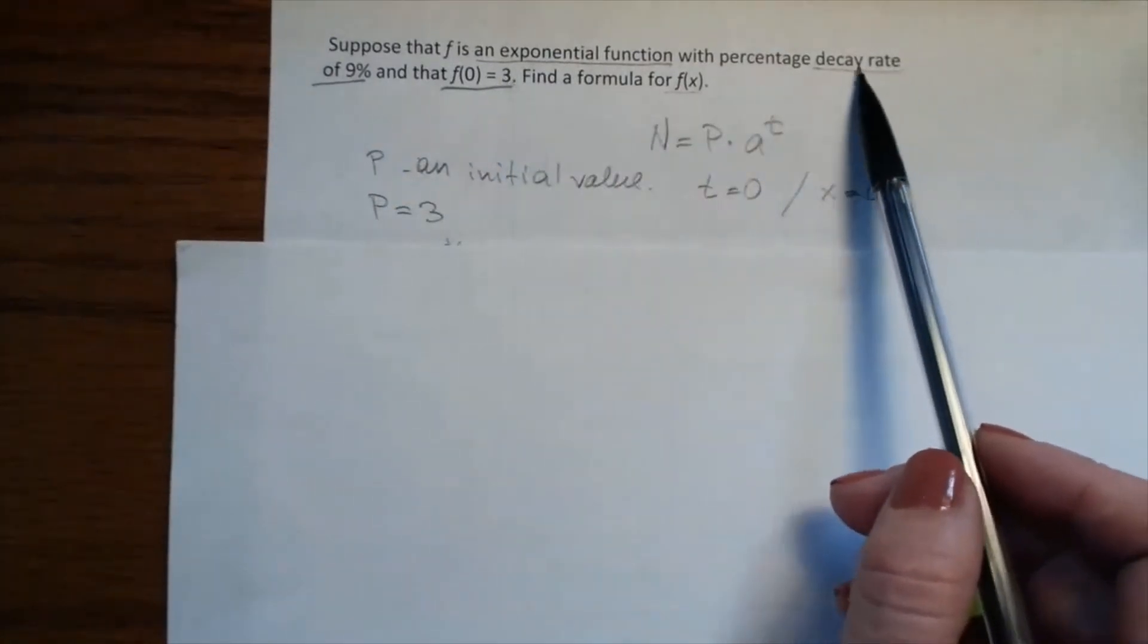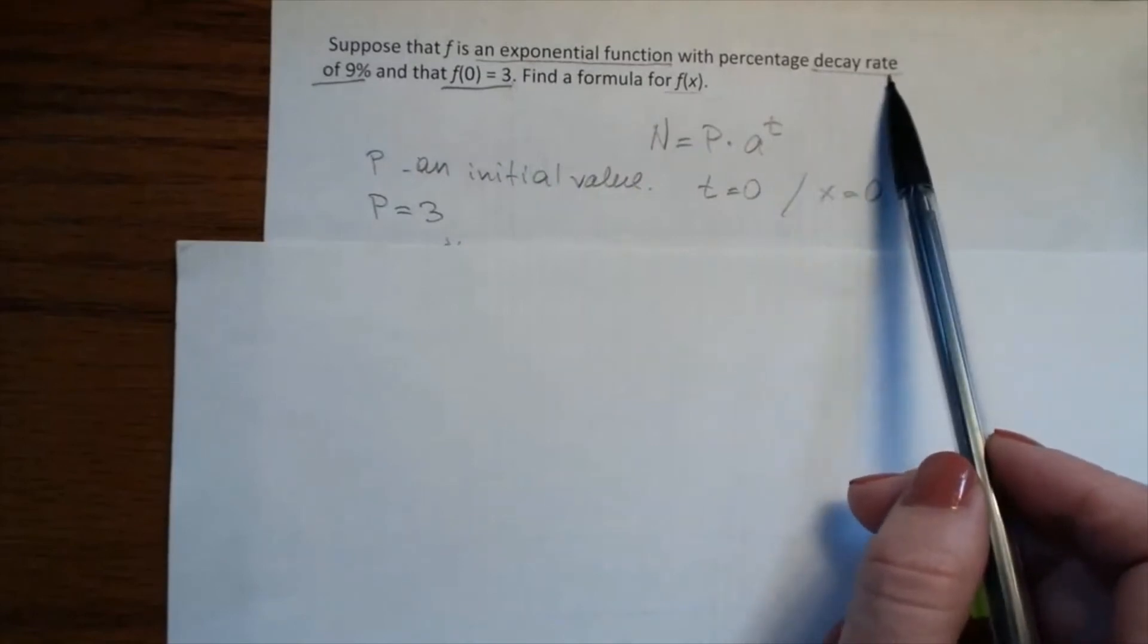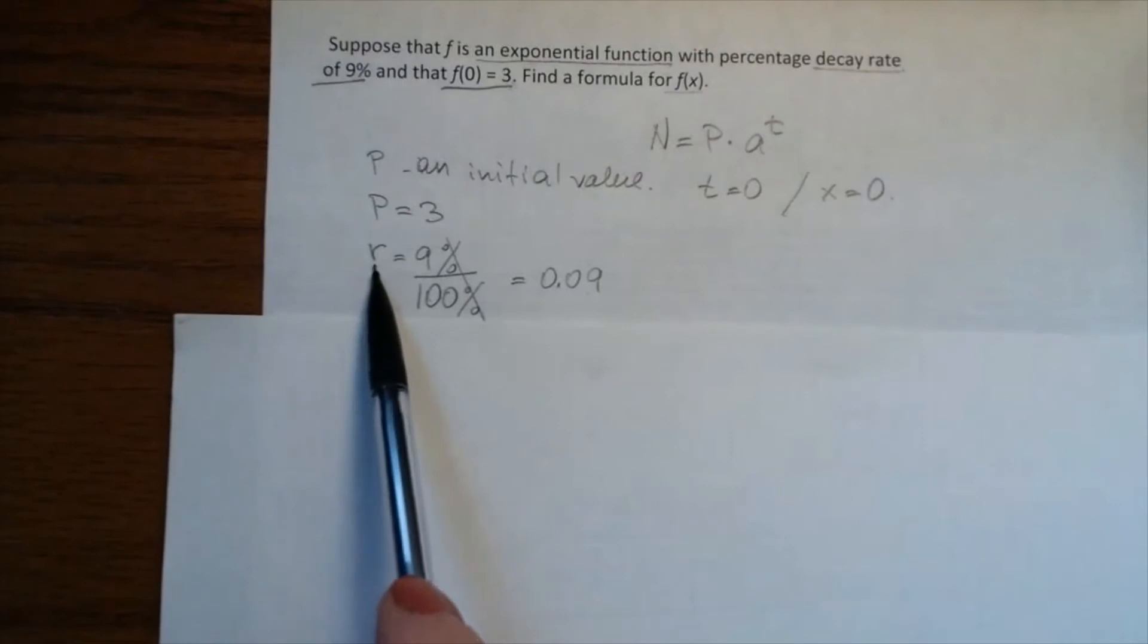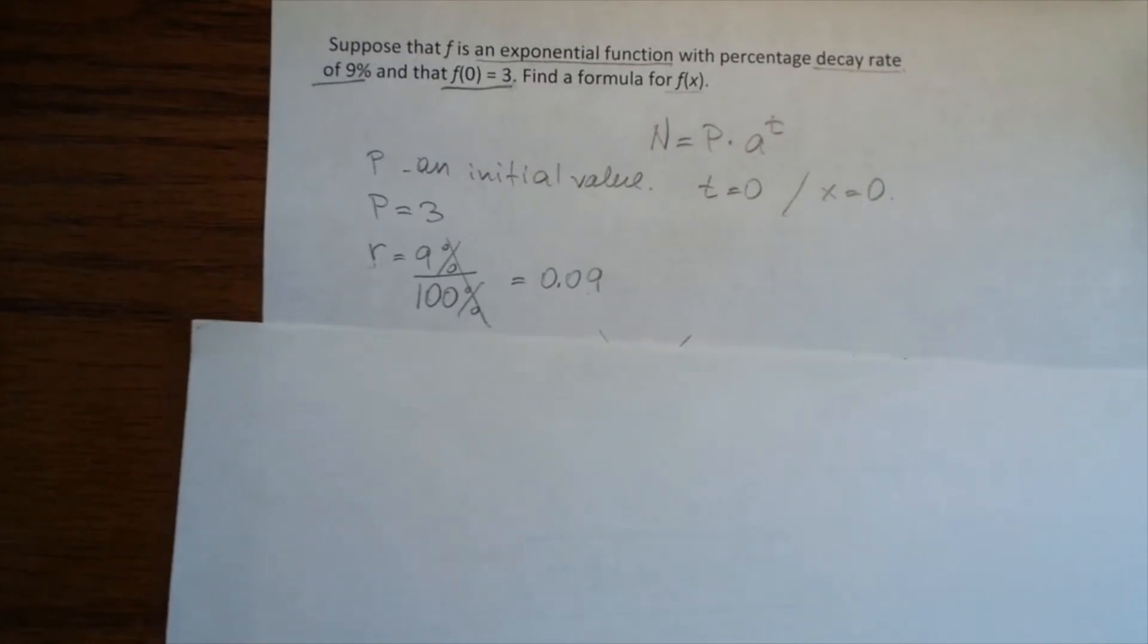What else is given? The decay rate of 9%. For decay rate, we use the letter r, so r = 9% = 0.09. Now we need to find the factor.